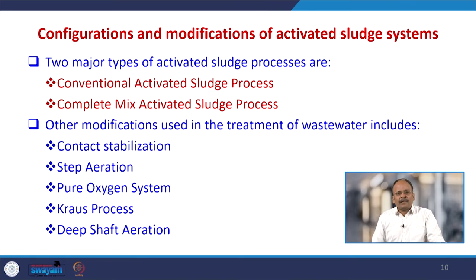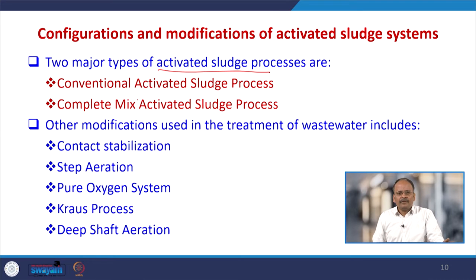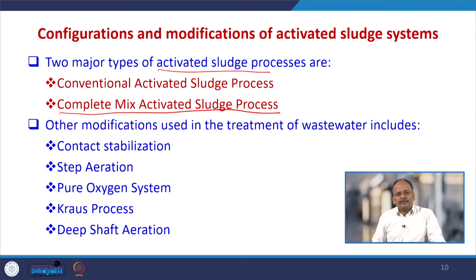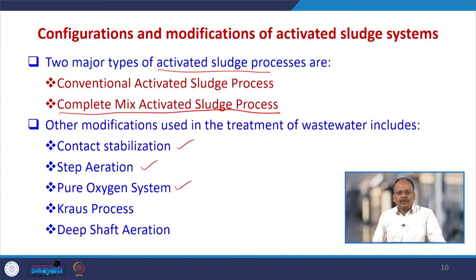There are different configurations and modifications possible in activated sludge systems. The two major types are the conventional activated sludge process and the complete mixed activated sludge process. Other modifications used in wastewater treatment include contact stabilization, step aeration, pure oxygen systems, and deep shaft aeration, among others.